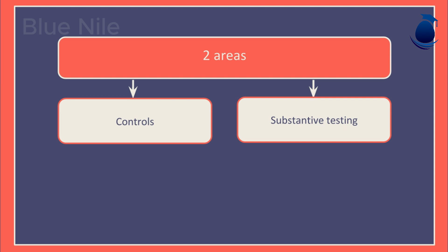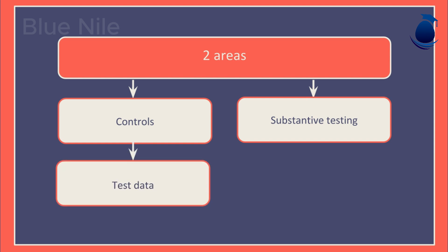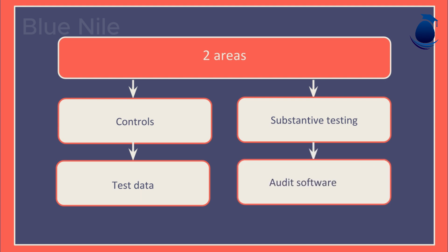When the auditor is assessing the control systems used by the client, they can use something called test data. When the auditor is performing substantive tests or procedures, they can use something called audit software.